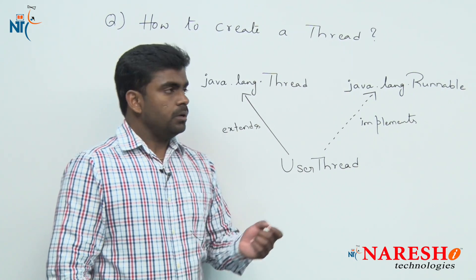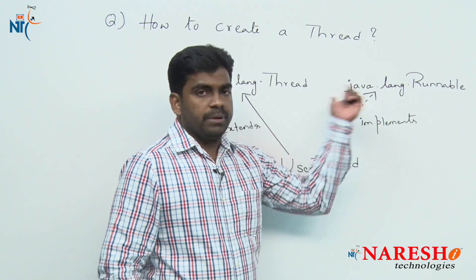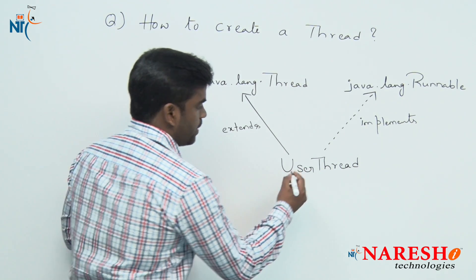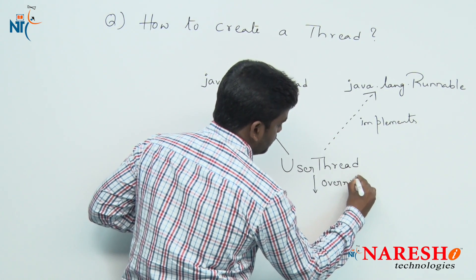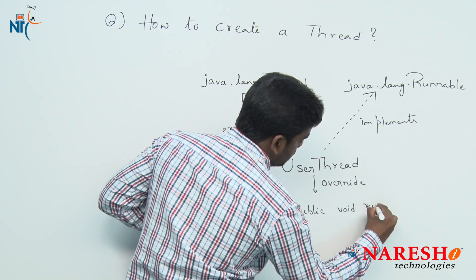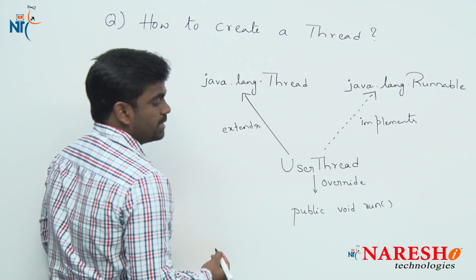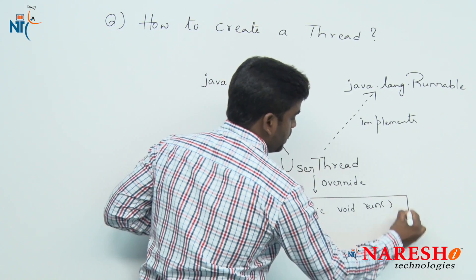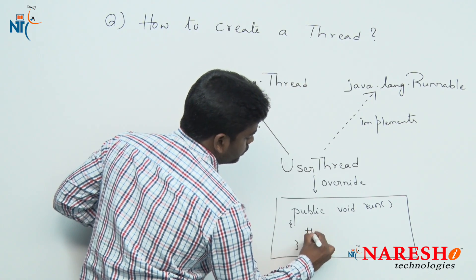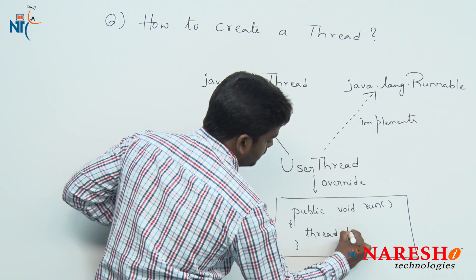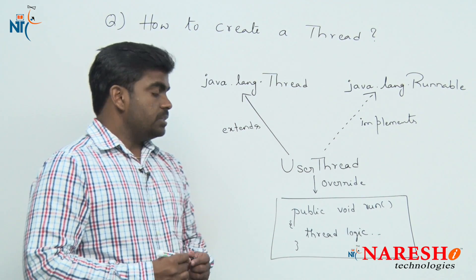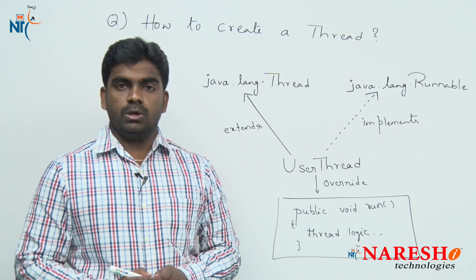But whatever you do — either you are extending the Thread class or you are implementing the Runnable interface — we need to override one method, and that is the run method: public void run. What does the run method hold? It holds the thread logic. Whatever you want to execute concurrently, simultaneously in the application, that logic you must place inside the run method.